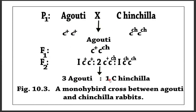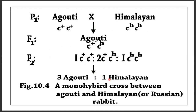Three agouti and one chinchilla. The next cross is between agouti and Himalayan, and the F1 generation shows the agouti phenotype, demonstrating complete dominance of agouti over the Himalayan allele. The F2 generation gives a ratio of 3:1.